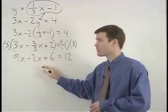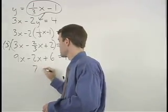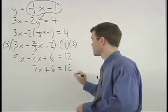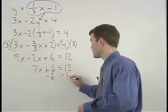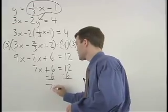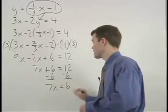Simplifying the left side, we have 7x plus 6 equals 12. Subtract 6 from both sides, and 7x equals 6.